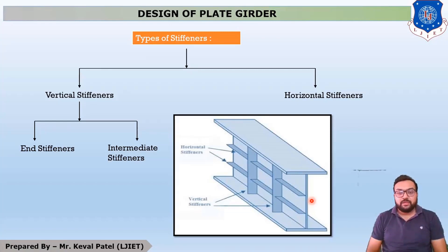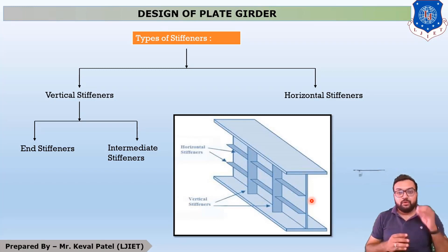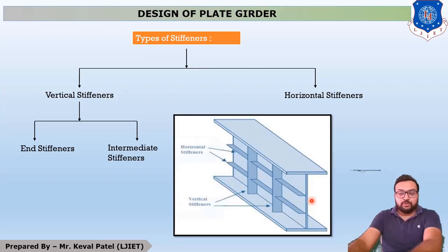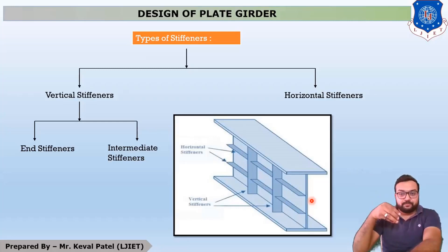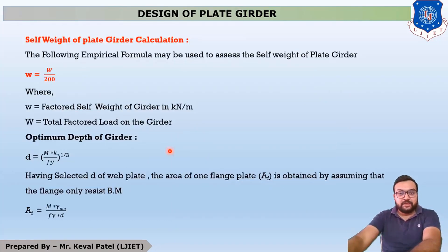Now we are moving further from an example point of view. Whenever you have to design any structural component, first of all you have to find out the load on that member. Self-weight also has to be considered. There is one empirical formula given in the book: the self-weight of a plate girder is calculated with the help of this equation.